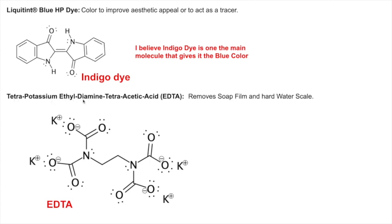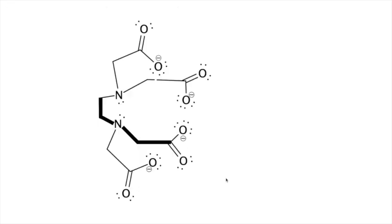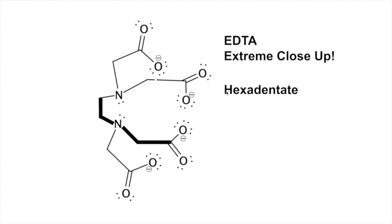Then there's tetrapotassium EDTA — ethylenediaminetetraacetic acid — which helps remove soap scum and hard water scale, and is also a preservative. EDTA has two carbons (ethane), two amines, and each amine has two carboxylates. It's remarkably good at binding metals — calcium, magnesium, iron — and you can actually use it to titrate almost every element on the periodic table. It's a hexadentate ligand, meaning a metal like calcium or magnesium can be bound by six 'teeth' — two oxygens, two more oxygens, and two nitrogens — forming an octahedral metal complex.